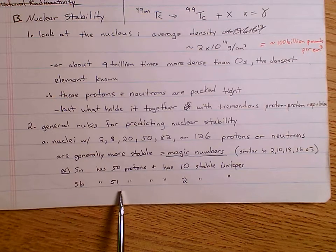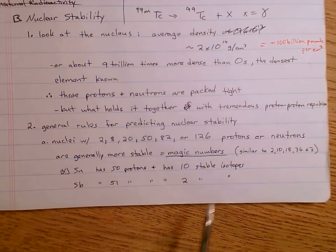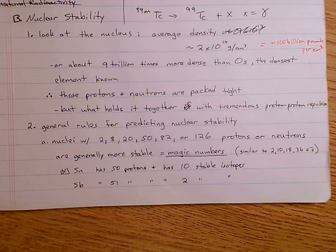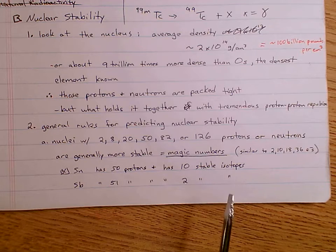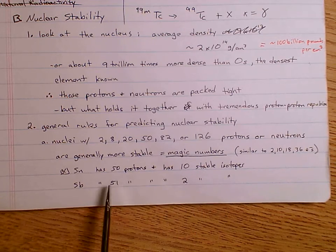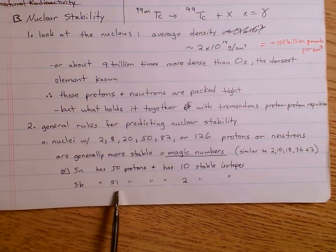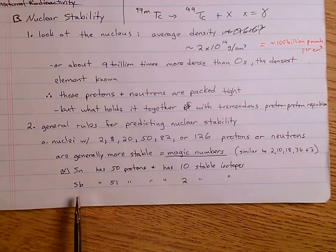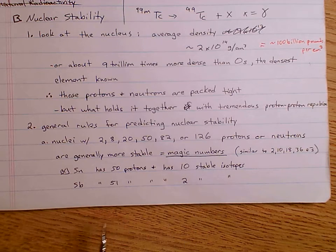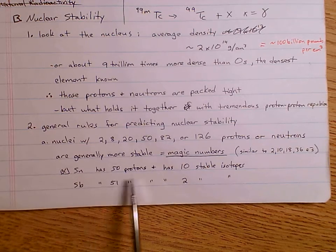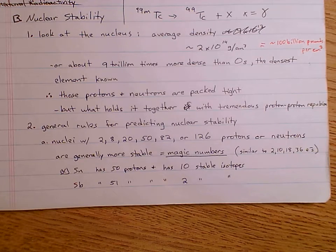Antimony has 51 protons in the nucleus and only has two stable isotopes. A stable isotope is one that does not decay via radioactive processes — does not give off alpha, beta, or gamma particles spontaneously. There are 10 stable isotopes of tin but only two stable isotopes of antimony, because 51 is not one of those magic numbers. 50 protons is a magic number, so most isotopes of tin are stable; 51 protons is not.